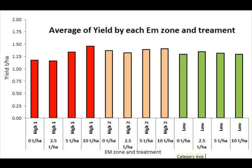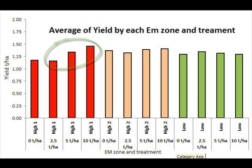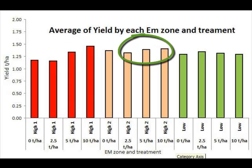We can also split our data extraction by each EM zone, and the averages are summarised in this graph. Here we can see the benefit of replication of data extraction. Note that in high EM zone 1 it appears we have a yield increase from gypsum response. However, the fact this isn't mimicked in high EM zone 2 indicates that this may be a one-off and is not a consistent effect across the whole paddock.